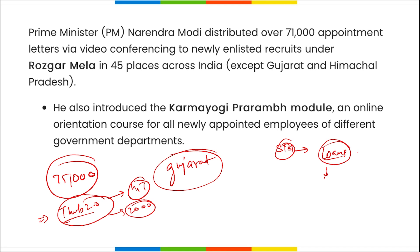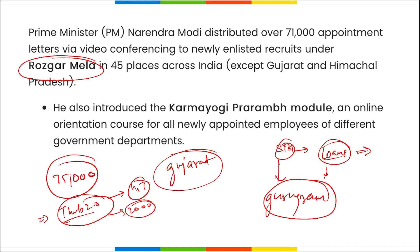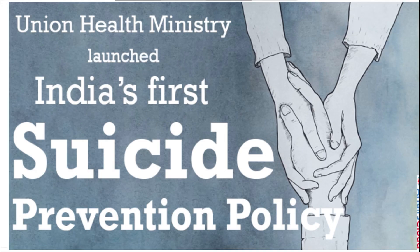SBI will launch a branch in Bangalore, Karnataka, providing collateral-free loans to startups. SBI is also planning to open a similar branch in Gurugram, Haryana. Coming back to the main news: 71,000 appointment letters were distributed under Rojgar Mela, and the Karam Yogi Praram module was provided to new inductees.